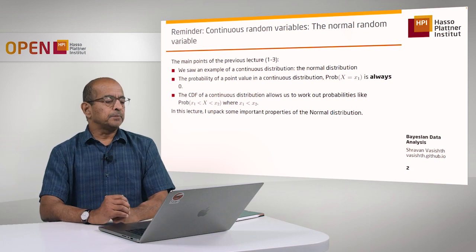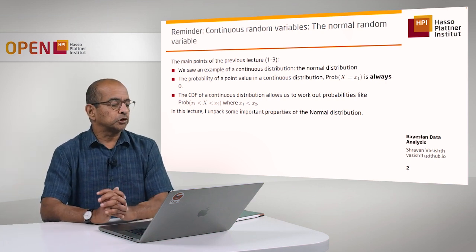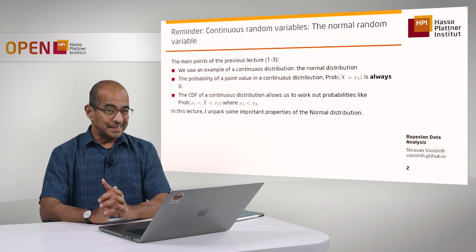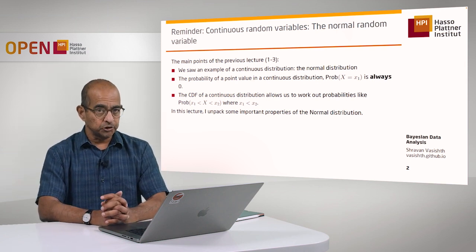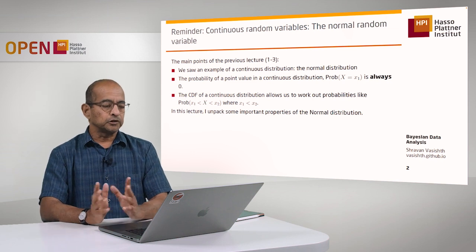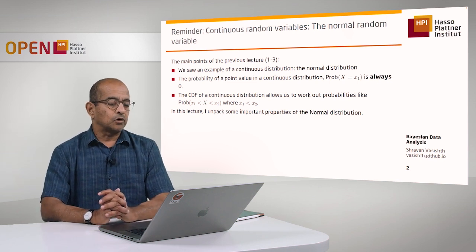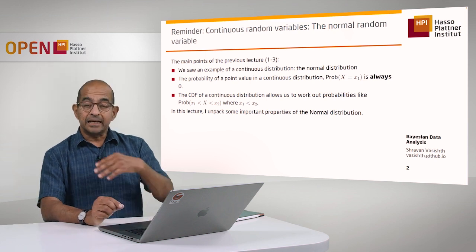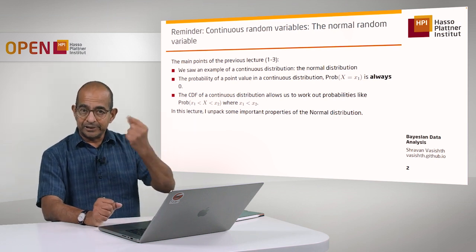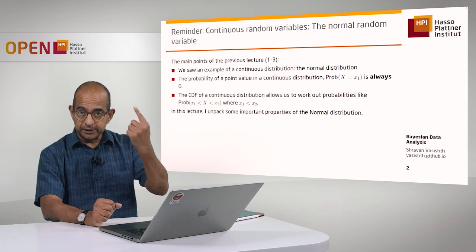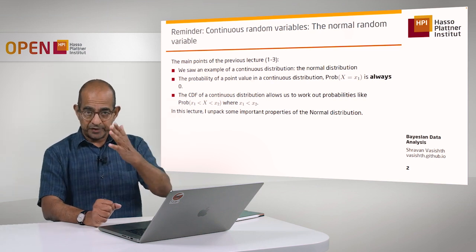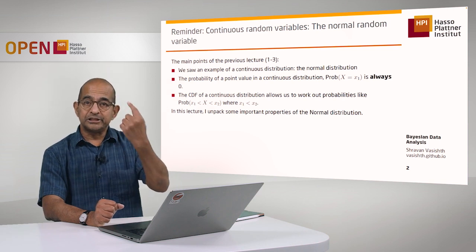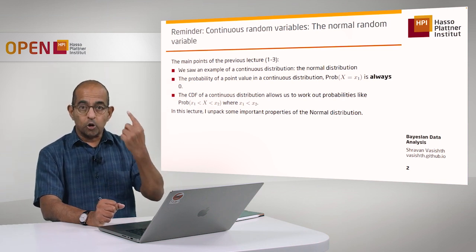The main points from my previous lecture that I want to remind you of: we saw what the probability density function of the normal distribution was. I also pointed out the very important fact that unlike a discrete random variable, where you can ask about the probabilities of particular outcomes, in the continuous case the probability of a particular outcome is always 0.